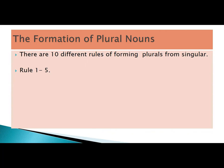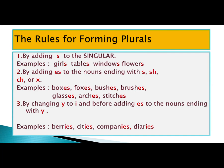There are ten different rules for forming plural from singular nouns, and in this lesson we are going to learn five rules. Rule number one: by adding S to the singular. For example: girls, tables, windows, flowers — we have simply added S and made them plural nouns.